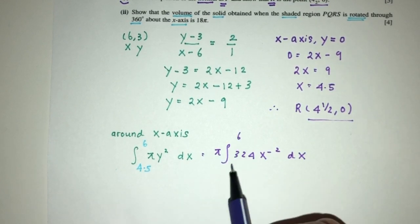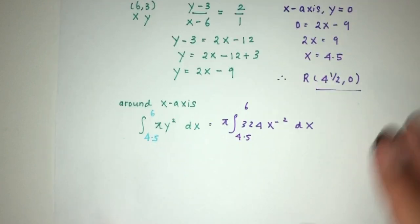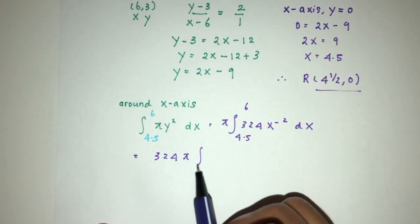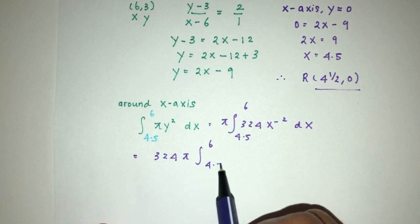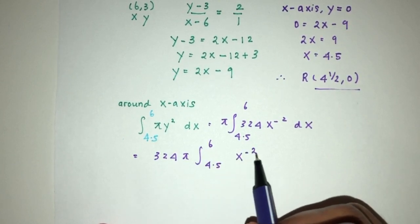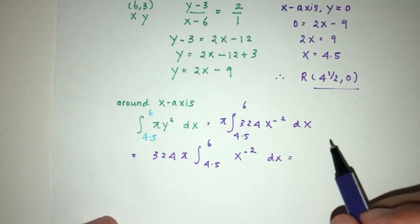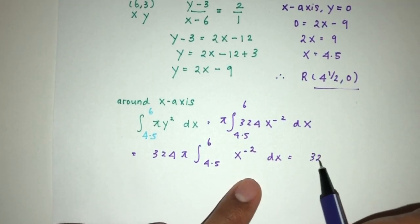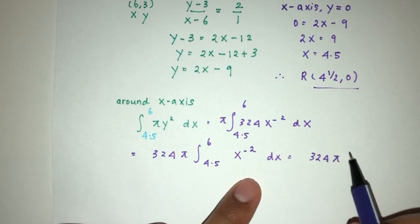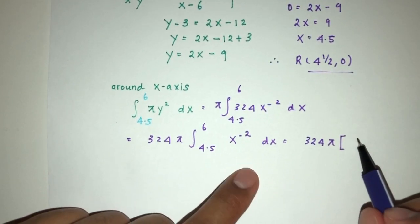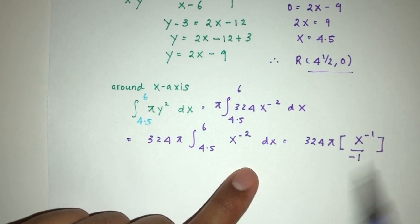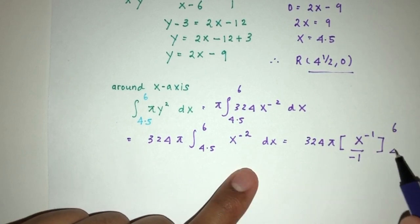So simplifying: 324 pi integration from 4.5 to 6 of x to the power minus 2. Step by step, first we add 1 to the power. We add 1, that will be minus 1. Then divide by the same power, from 6 to 4.5.